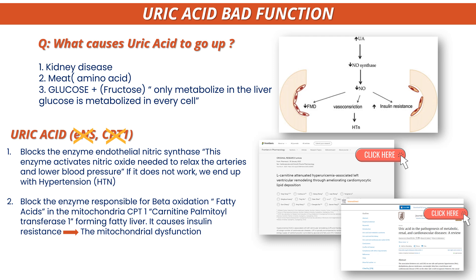So uric acid is not just about gouty arthritis as many think. Uric acid is a very bad player in fatty liver disease and in hypertension. If you eat a lot of meat, if you are heavily loaded with heavy metals, you will have problems with fatty liver, hypertension, and kidney disease — and all of those contribute to metabolic syndrome, specifically to mitochondrial dysfunction.